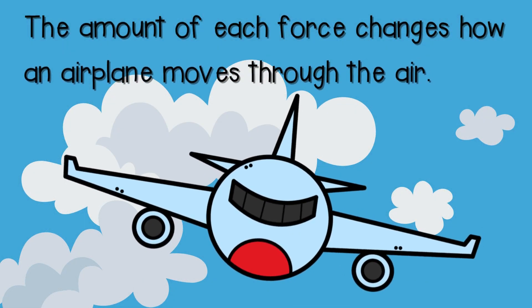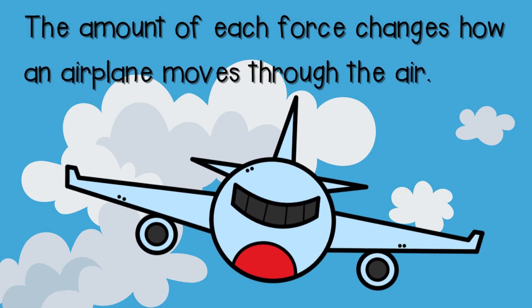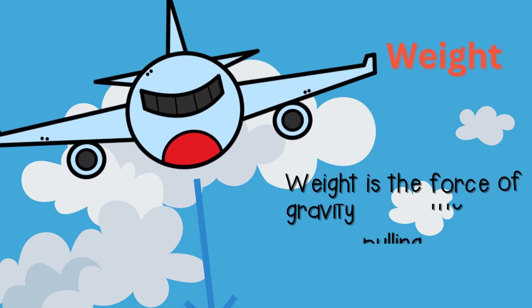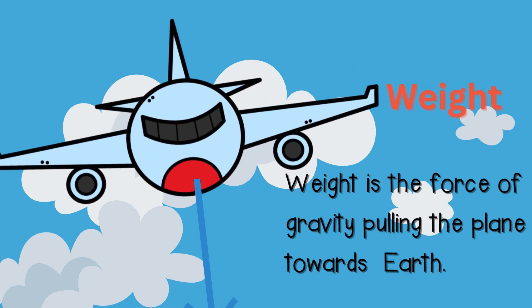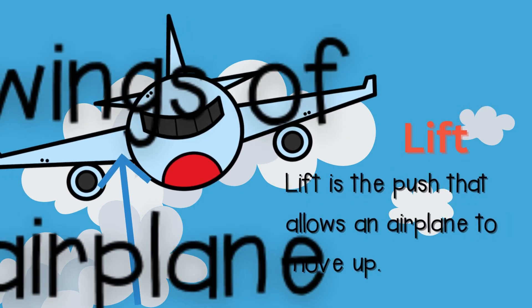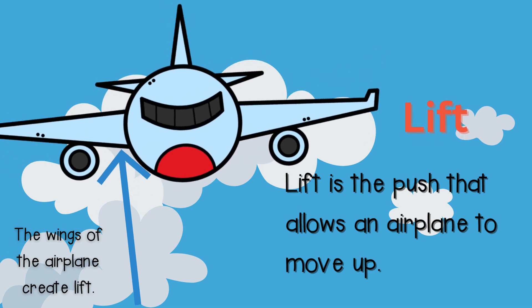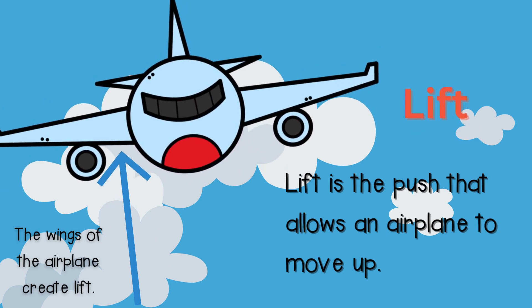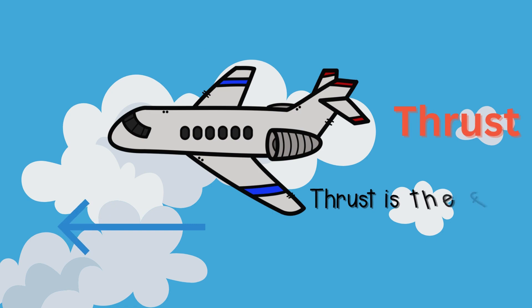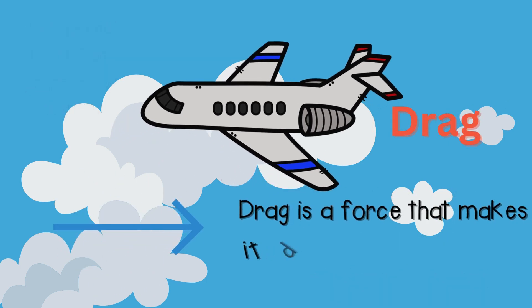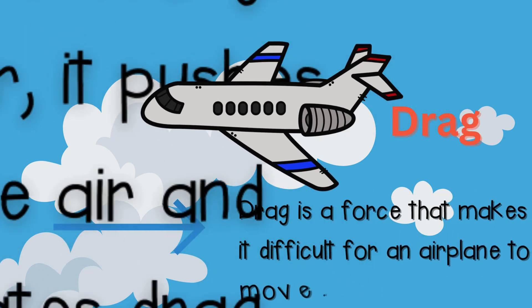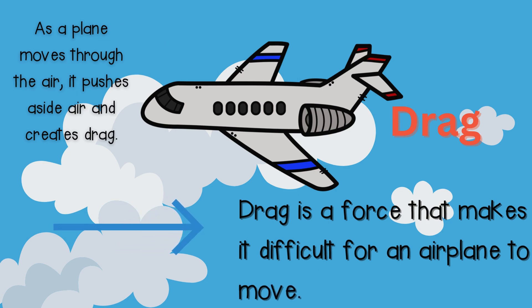The amount of each force changes how an airplane moves through the air. Weight is the force of gravity pulling the plane towards Earth. Lift is the push that allows an airplane to move up. The wings of an airplane create lift. Thrust is the force that pushes an airplane forward, and it comes from engines or propellers. Drag is a force that makes it difficult for an airplane to move. As a plane moves through the air, it pushes aside air and creates drag.